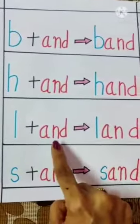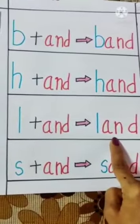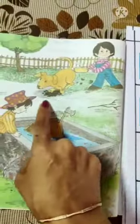L-a and land. Land hoti hai zameen. This is land.